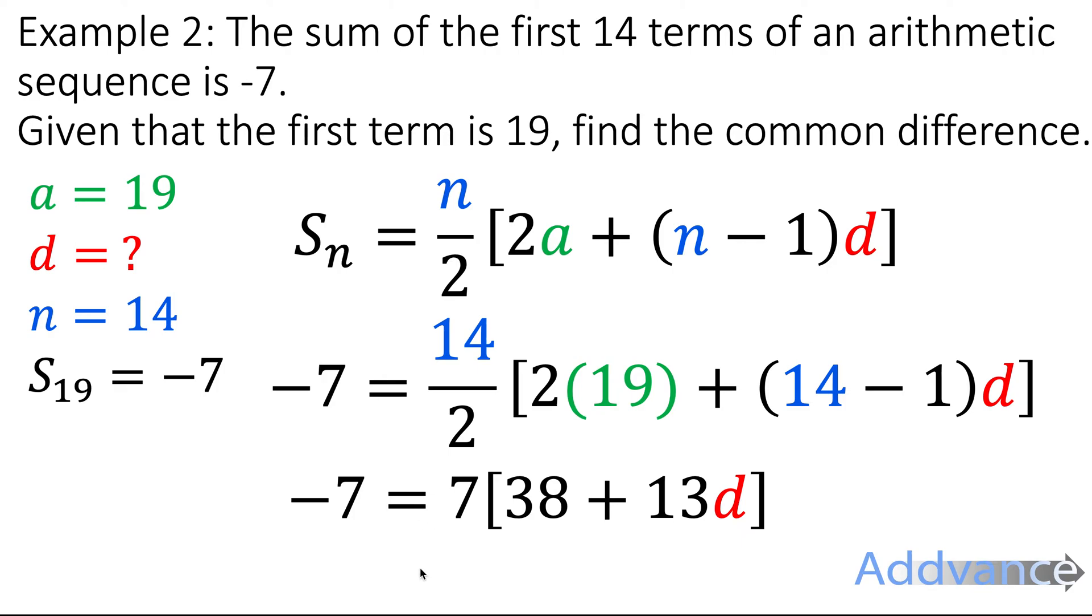Now we can expand the brackets. 7 times 38 is 266. 7 times 13 was 91. For this expression, let's take 266 off both sides. We get this. And then we can divide by 91. Minus 273 divided by 91 is minus 3. So the difference is minus 3.